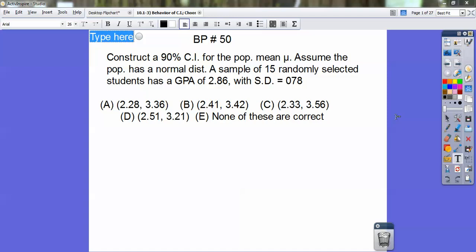Board Problem 50 says, construct a 90% confidence interval for the population mean μ. Assume the population has a normal distribution. A sample of 15 randomly selected students has a GPA, that's your x-bar, of 2.86 with standard deviation of 0.78.